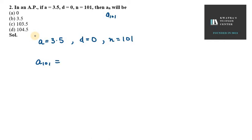So we know the basic concept here is a_n equals a plus (n minus 1)d. So a value is given, that is 3.5, plus n in this case is 101 minus 1, times d. D is 0.